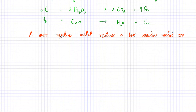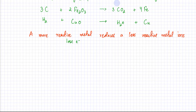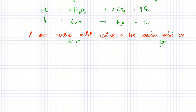Another way to look at this: a more reactive metal has a higher tendency to lose electrons, so it will try to lose as many electrons as possible. A more reactive metal ends up reducing a less reactive metal ion — those metal ions end up gaining electrons when they are in the company of a more reactive metal.